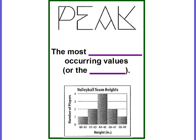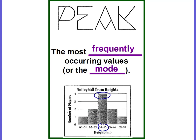Then we have peaks. Peaks are the most frequently occurring values, or the mode. Looking at this histogram, which one occurs the most? It's going to be the bar that's the tallest, which happens to be the 64 to 65 range. The tallest would be the peak, so this graph peaks at 64 to 65.